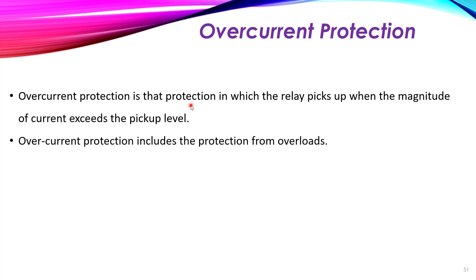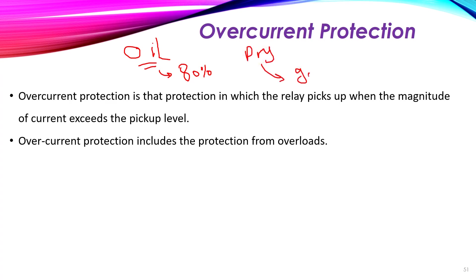Over-current protection includes protection from overloads. There are two types: the first is overloading, which means we are loading our machines greater than their rated value. For example, with an oil transformer we load it by 80 percent, and a dry transformer by 90 percent — these are the maximum loading values.